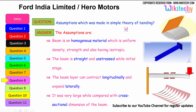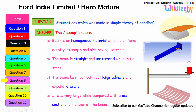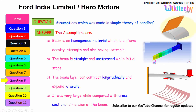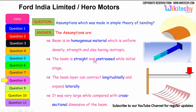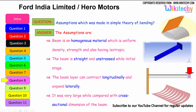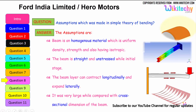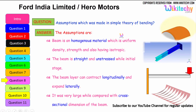What are the assumptions made in the simple theory of bending? First, the beam is made of a homogeneous material with uniform density, strength, and isotropic properties. Second, the beam is straight and unstressed in its initial stage. Third, the beam can contract longitudinally and expand laterally. Fourth, the length of the beam must be very large compared with the cross-sectional dimension of the beam.